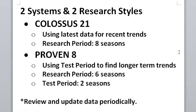The two systems and two research styles I have now are: the Colossus 21, which uses the latest data looking for recent trends with a research period of all eight seasons — so it uses all available data, especially the latest data at the end of the graphs. The Proven Eight is still splitting its data between a six-season research period and a two-season test period, trying to find longer-term trends, but now updated with the latest data in both periods.